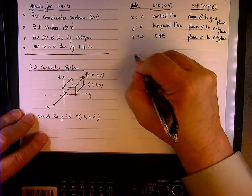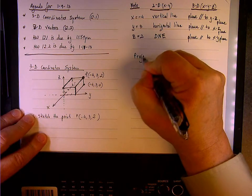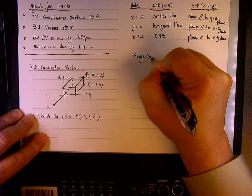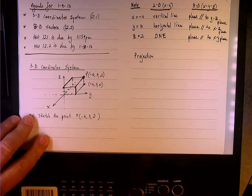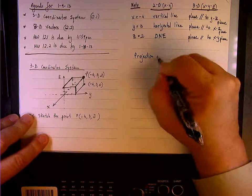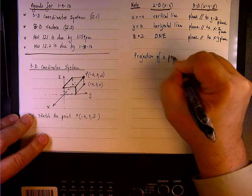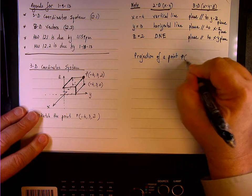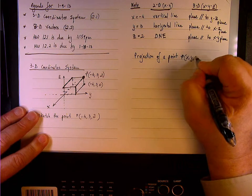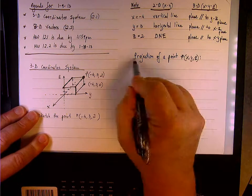All right, another thing that we need to discuss is something called projection, and we'll see it on the next section when we deal with vectors. So projection of a point, let's say if you have a point P with coordinate x, y, z.